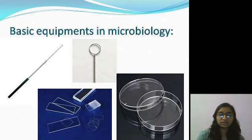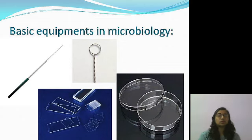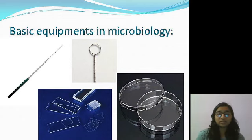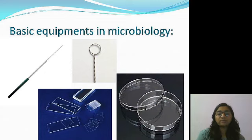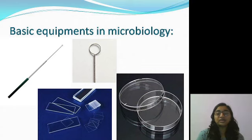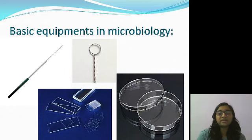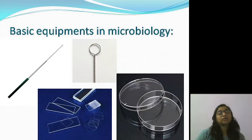That is the special property of the nichrome wire loop — it heats up very quickly and cools down just as fast. This property is why we use it to transfer microorganisms from one place to another. The second diagram below shows some glass slides placed together. Slides are familiar to everyone. The small square-shaped items are cover slips, whose thickness is very low, whereas the rectangular glass slides have greater thickness.